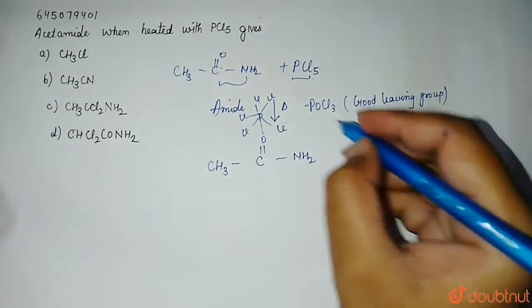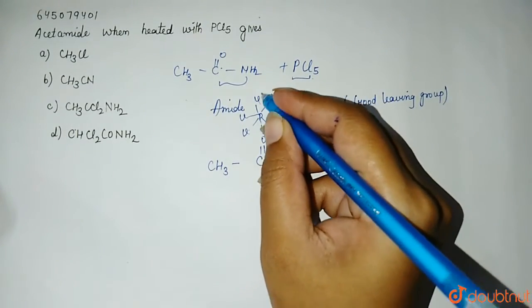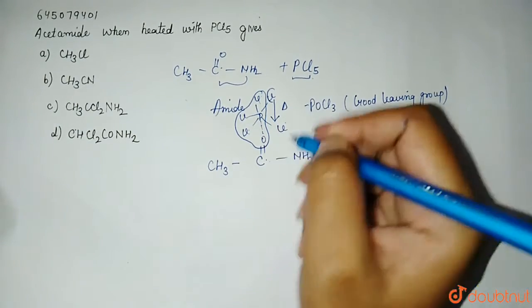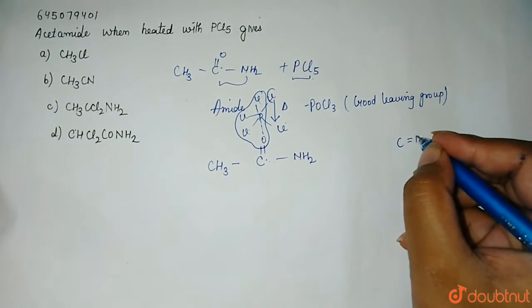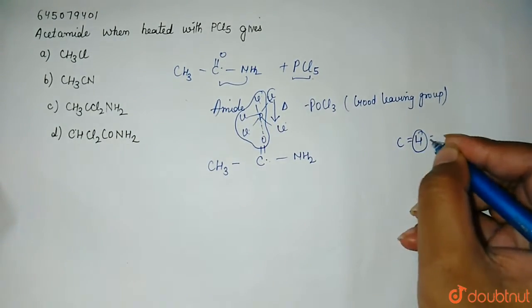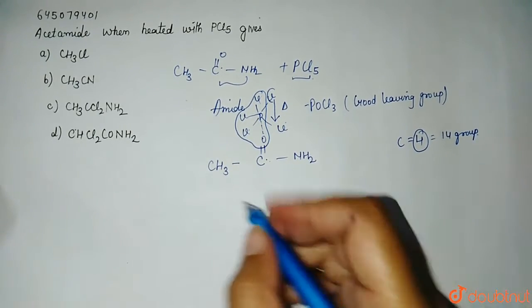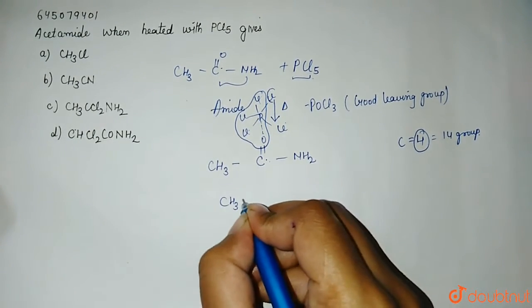Now, this POCl3, this is your oxygen and this will leave out and this chlorine will get attached because carbon can form maximum 4-valency because it belongs to 14-group. So, to fulfill that, your 2-chlorine has to become in place of that.